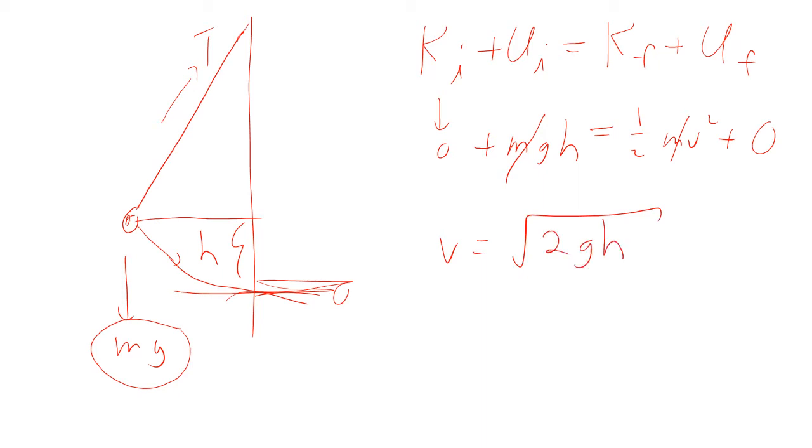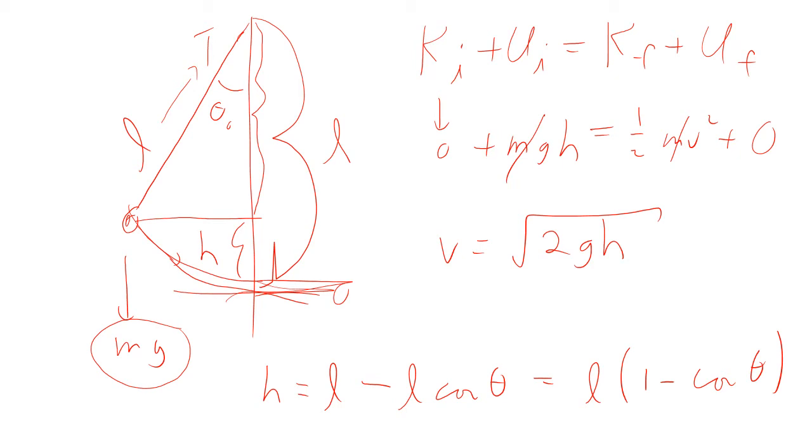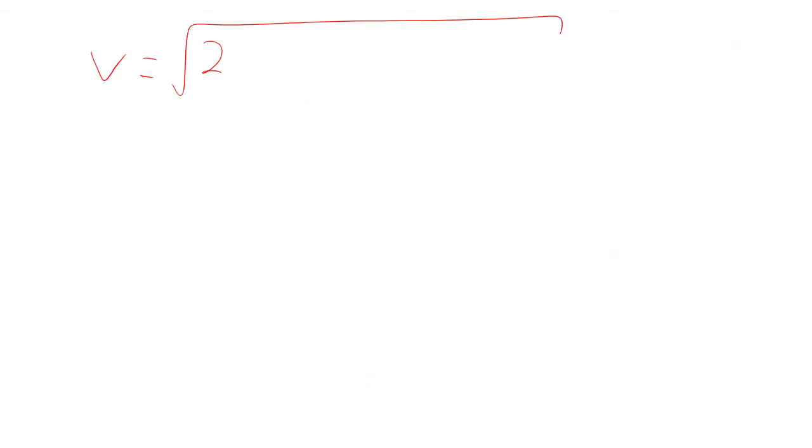Once again, that same equation that we keep seeing over and over again. Now, all we have to do is find what is h. So we look at this and we say, this is some length l, and this is some initial angle theta naught. Well, when it swings down to the bottom, this is length l. So this length right in here is going to be l cosine theta. So h is going to be l minus l cosine theta. Or I just like to write it neatly, l times 1 minus cosine theta. So if I plug that into v, then the velocity is square root of 2gl times 1 minus cosine theta.